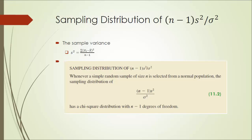Whenever a simple random sample of size n is selected from a normal population, the sampling distribution of n minus 1 times s squared divided by sigma squared has a chi-square distribution with n minus 1 degrees of freedom.